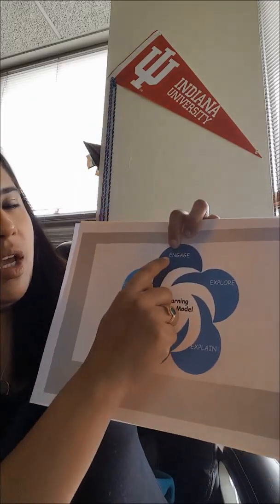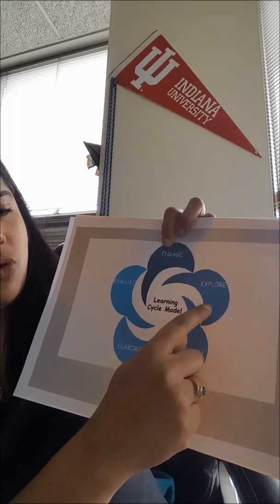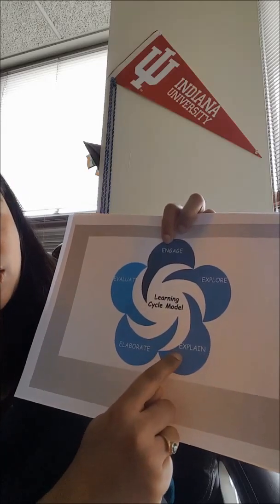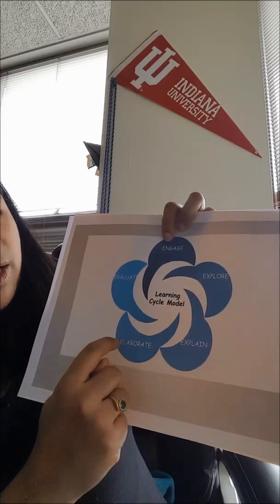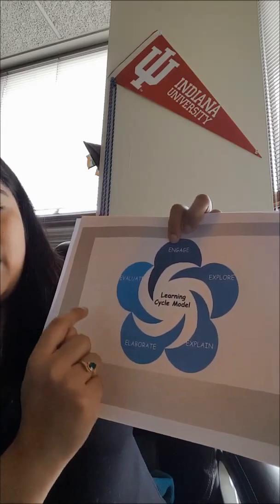The 5E model has five phases: Engage, Explore, Explain, Elaborate, and Evaluate.